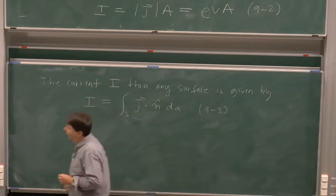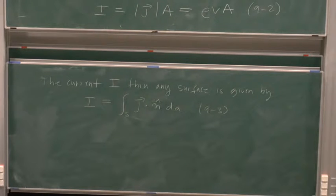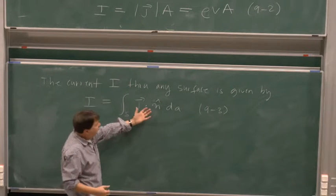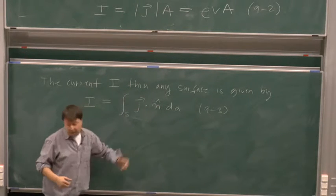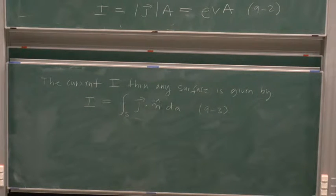The current I through any surface is given by - and we've already defined all these symbols - that I equals the surface integral of the current density over the area. It's quite straightforward: if I integrate the normal component of this vector in amps per square metre over the entire surface, I get the total current passing through the surface.